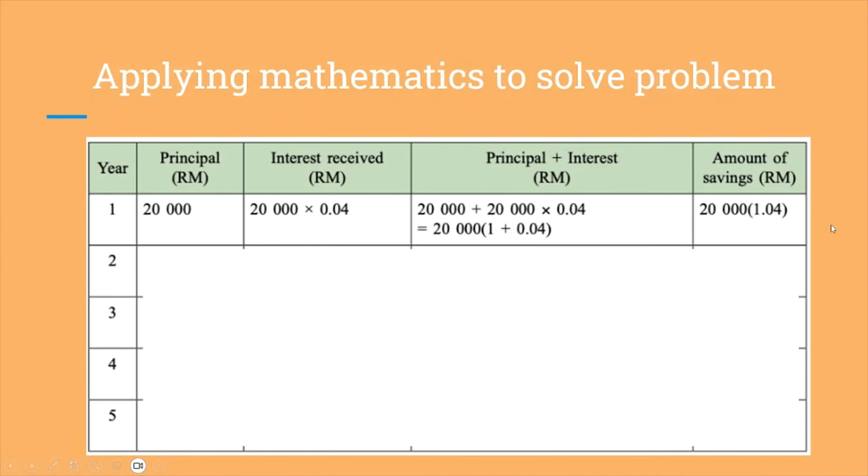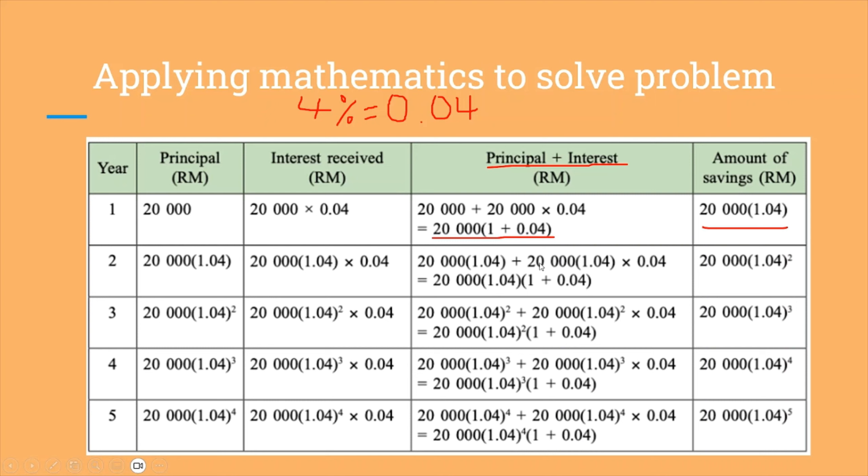When we follow on with step 3, we apply mathematics to solve the problem. The principal is multiplied by the interest that is received. The interest is 4%. Remember to translate into decimal point to 0.04 before multiplying. At the end of the year, the interest needs to be added with the principal as you can see over here, and we get the answer. This is the total savings from the first year. Then we go to second year, third year. We use similar calculations. At the end, we have this.